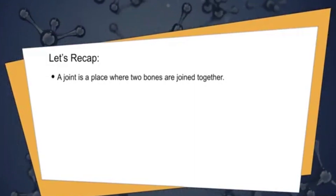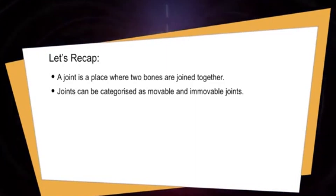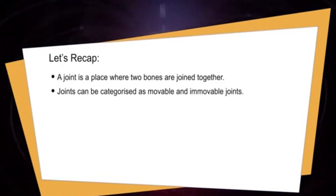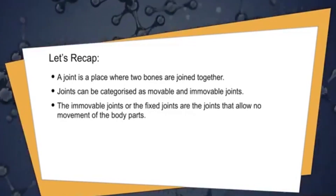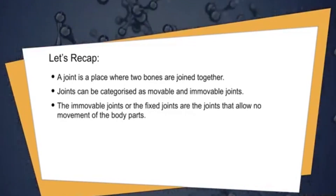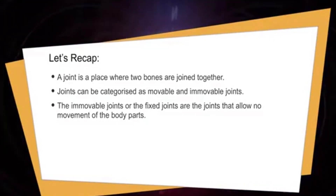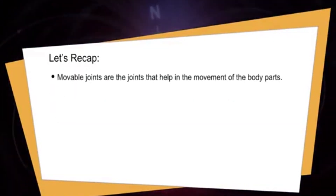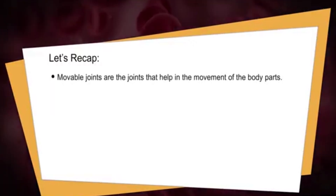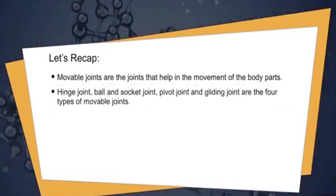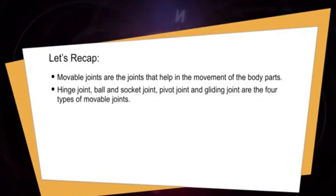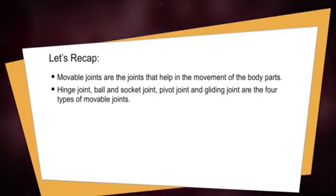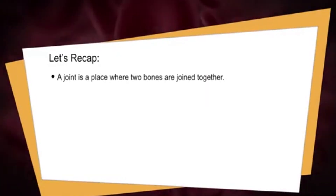Let's do the recap. A joint is a place where two bones are joined together. Joints can be categorized as movable and immovable joints. Immovable joints are fixed joints that allow no movement of the body parts. The four types of movable joints are: the hinge joint, the ball and socket joint, the pivot joint, and the gliding joint.